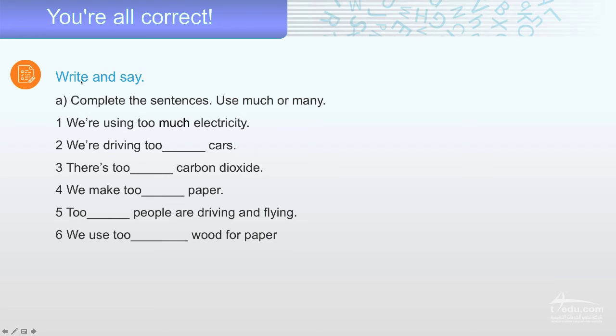Now, write and say. Complete the sentences. Use much or many. Much or many. Much with uncountables. Many with countables. Don't forget that. Number one. We are using too much electricity. Too much. Electricity, uncountable. Much.